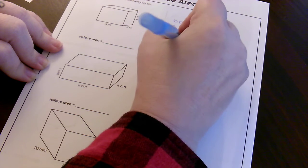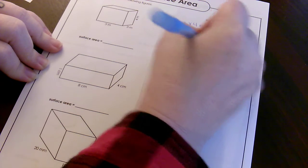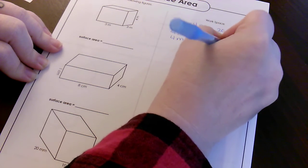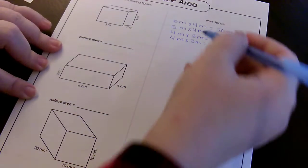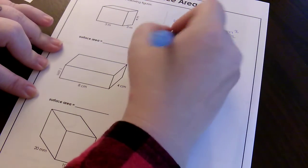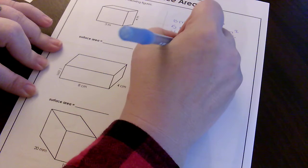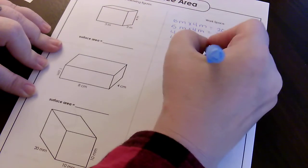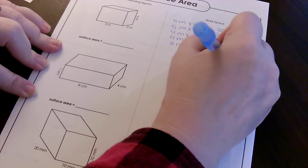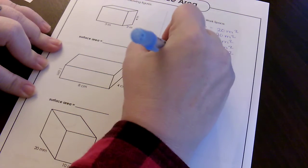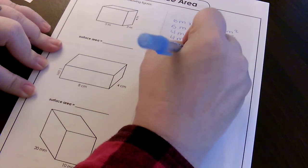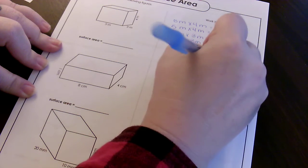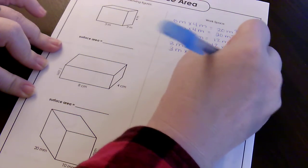And then the last one is 3 meters times 5 meters right here, and that is also mirrored, so that gives me 15 meters squared. And 3 times 5, I'm going to do it again.